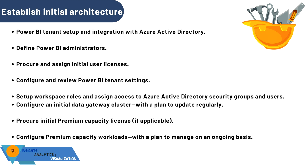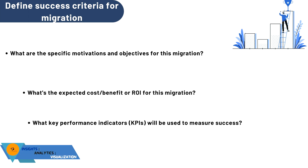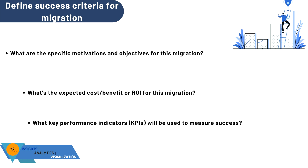Now let's talk about defining success criteria for migration. The first task is understanding what success looks like for migrating an individual solution. Answer these questions: What are the specific motivations and objectives — why migrate to Power BI, what features are available, what analyses can be performed, is it compatible? Also, what is the expected cost-benefit or ROI? Having clarity on costs, increased capabilities, decreased complexity, or increased agility is helpful in measuring success and provides a guiding principle for decision-making during migration.